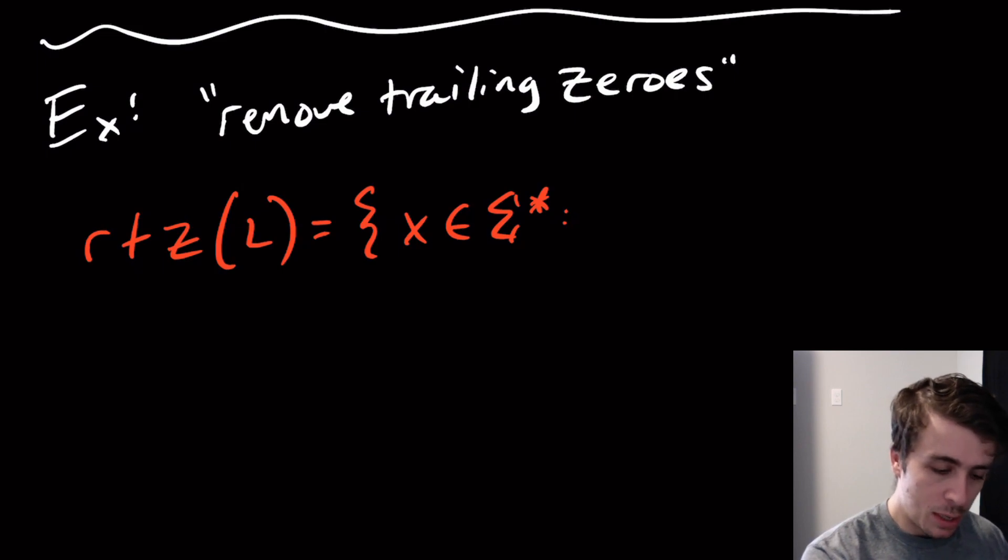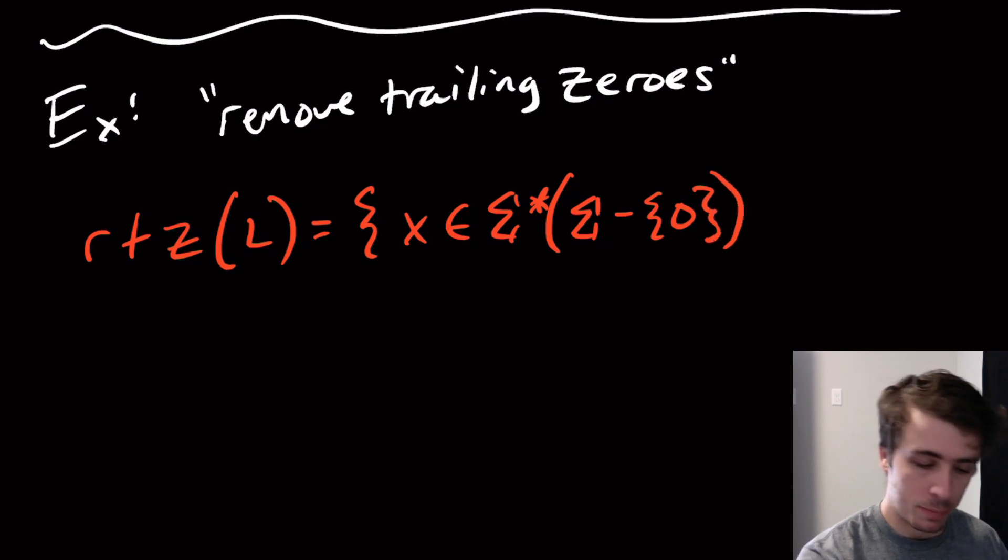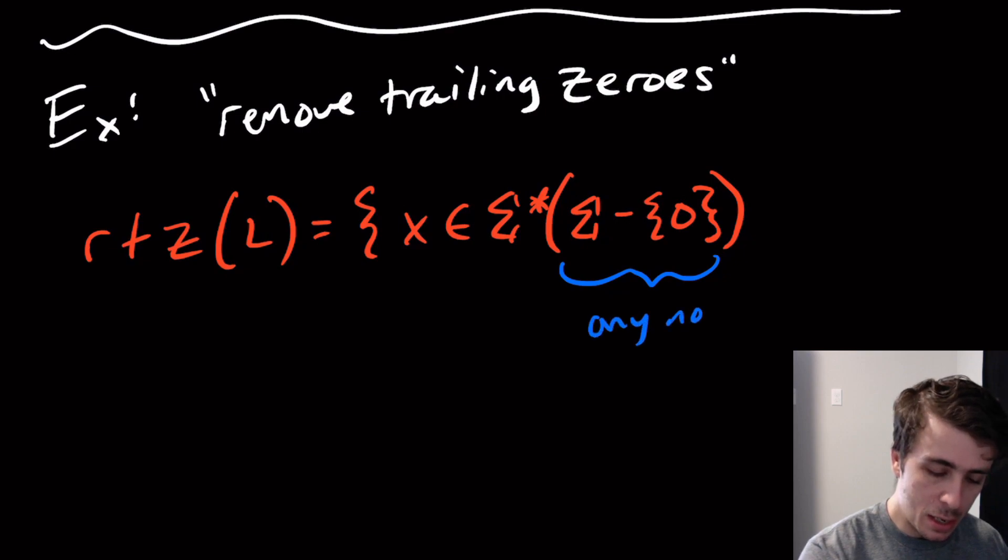What we mean here, or another way to interpret this, is we're going to format it like this: we can have anything at the beginning, we could have full zeros at the front, but we're not allowed to have zeros at the end. Here what I'm going to do is take sigma take away the character zero, so this is saying any non-zero character can go there, and before that anything can go there.